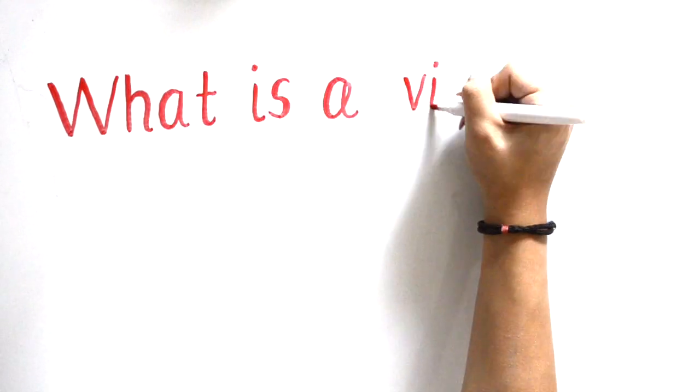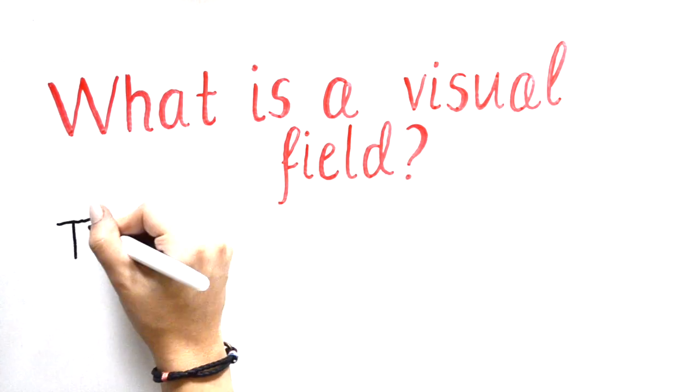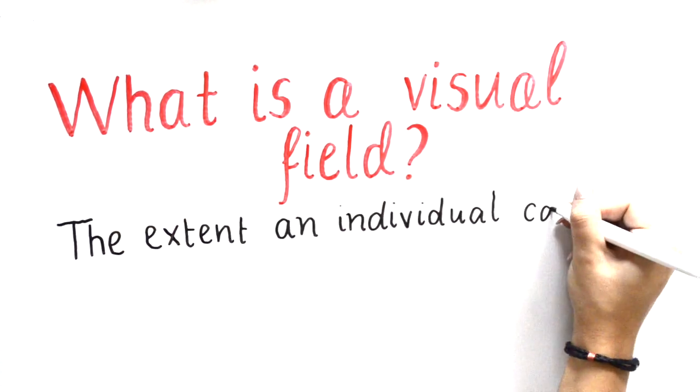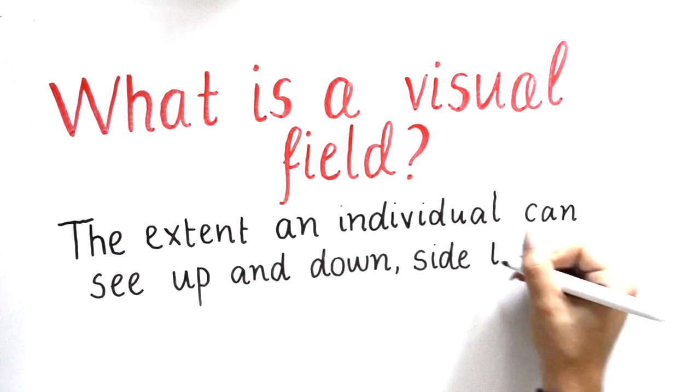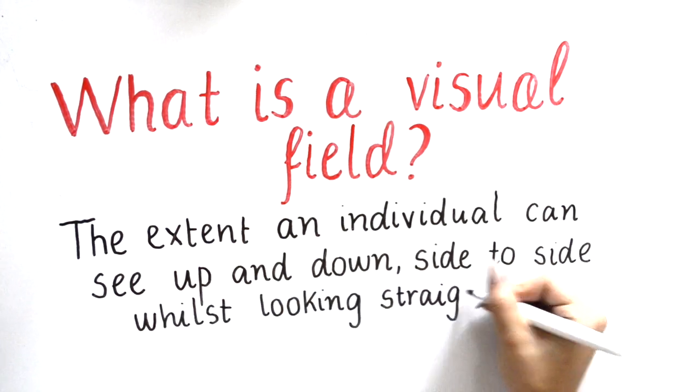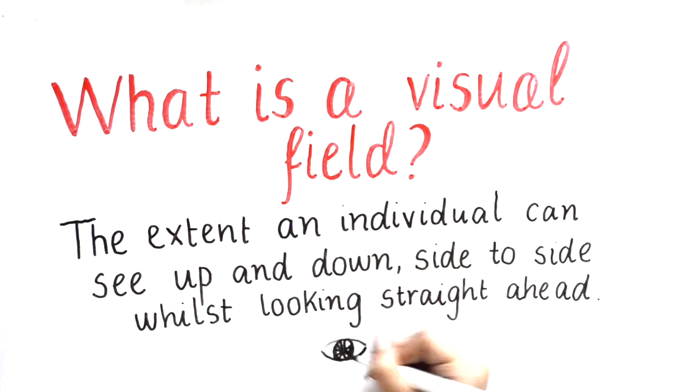So what is a visual field? The visual field is the extent an individual can see up and down, side to side, whilst looking straight ahead. This is also referred to as your peripheral vision.